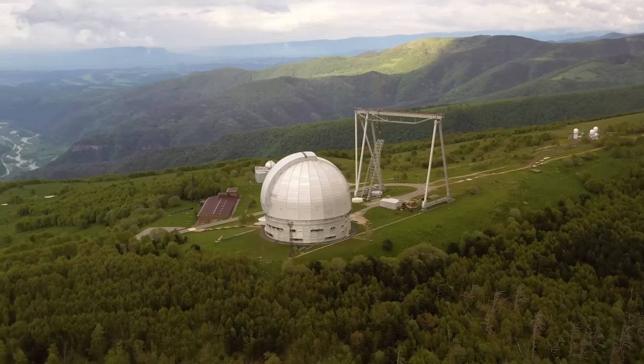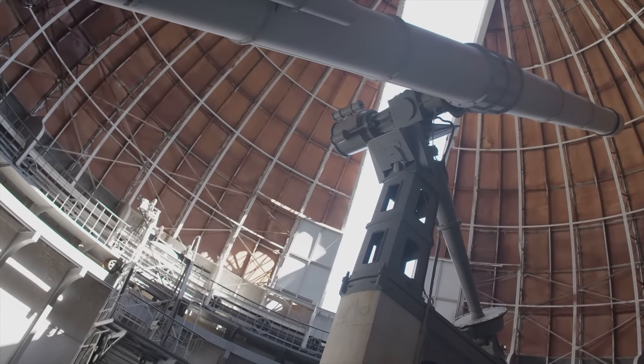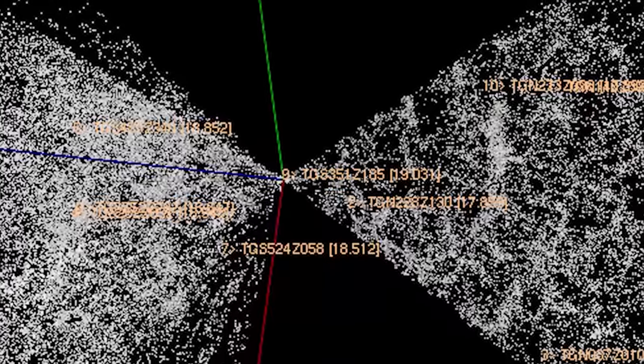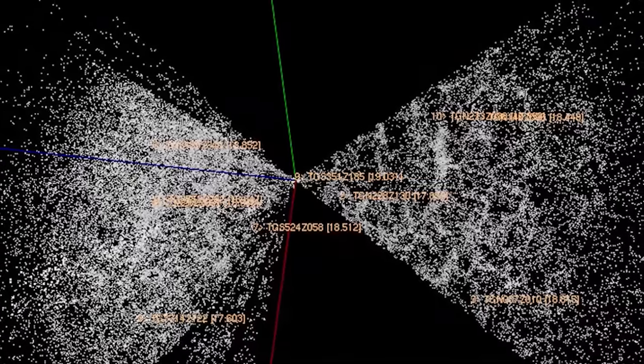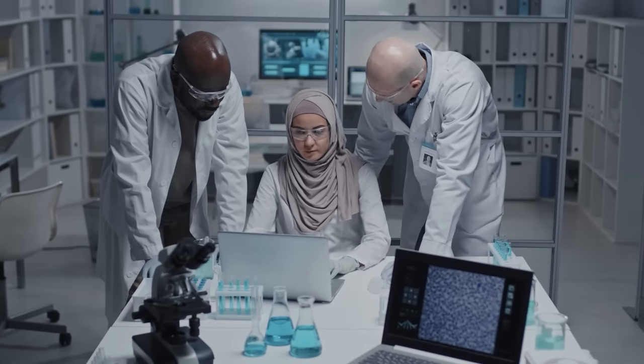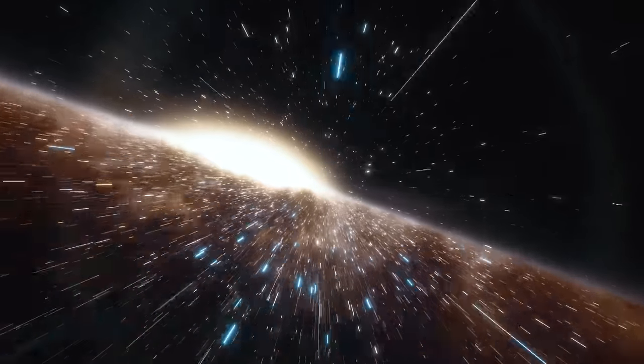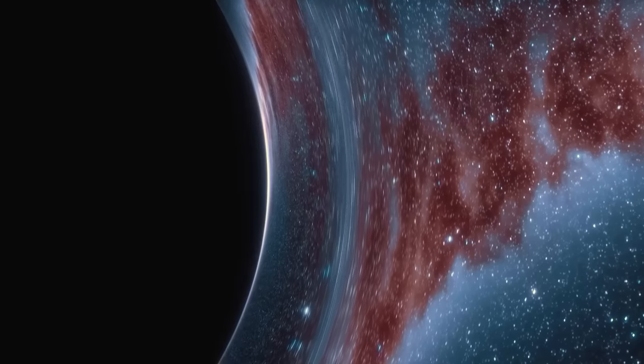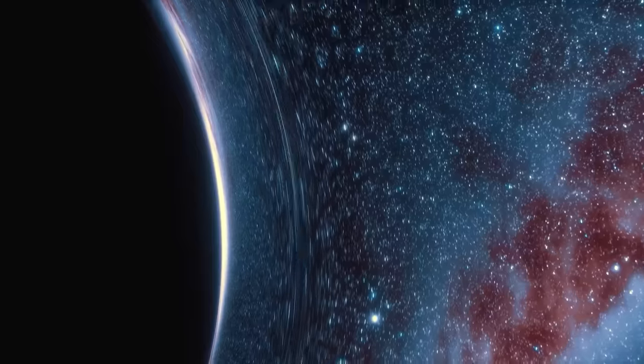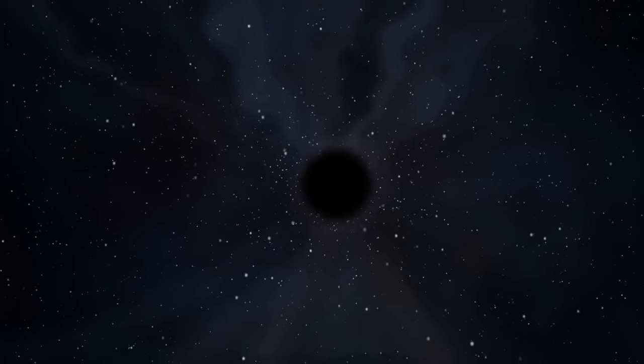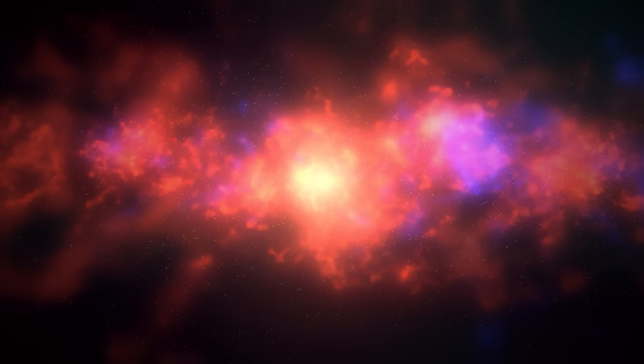The discovery of the Boötes Void was relatively recent in astronomical terms. Robert Kirschner and his team of astronomers first identified it in the mid-1980s. The Boötes Void's existence challenges our understanding of the universe's structure. Its sparse galaxy distribution and enormous size continue to be subjects of investigation and fascination for astronomers. Every new piece of data regarding this cosmic mystery pushes us to refine our models of the universe's evolution and structure, reminding us that the cosmos still holds many secrets waiting to be unveiled.